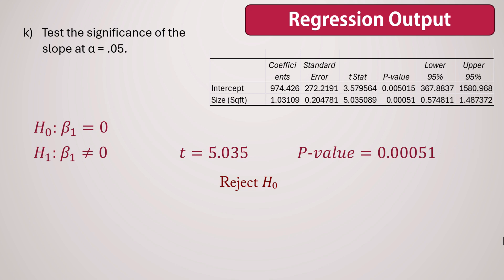In practical terms, this means there is a significant linear relationship between apartment size and monthly rent. Remember, while this test tells us the relationship is significant, it doesn't tell us about the strength of that relationship. That's what our earlier analyses of R and R² were for. And that's it for this video. Thank you.